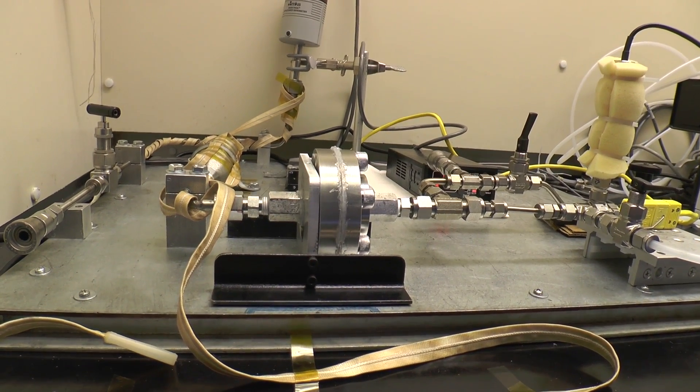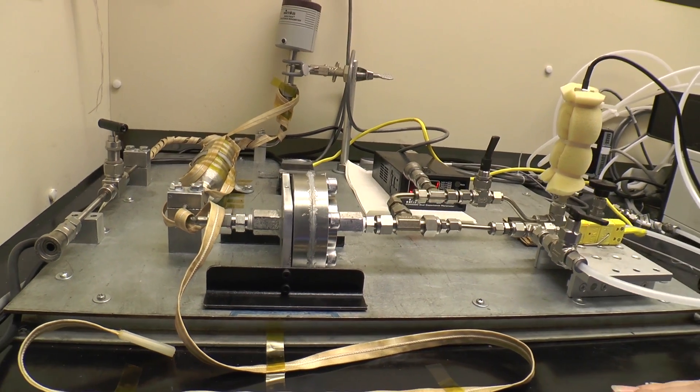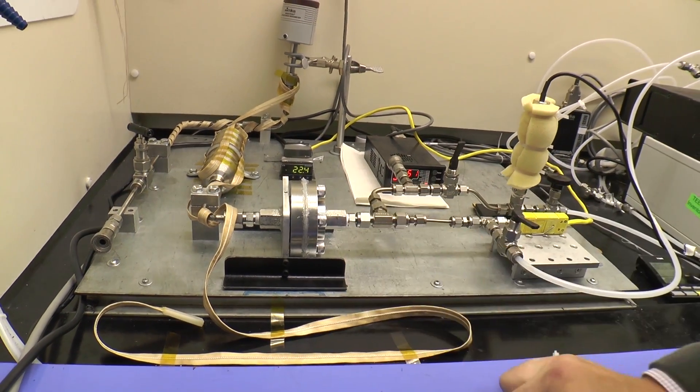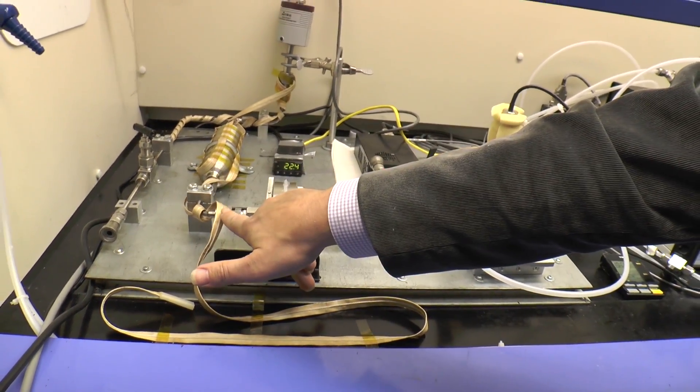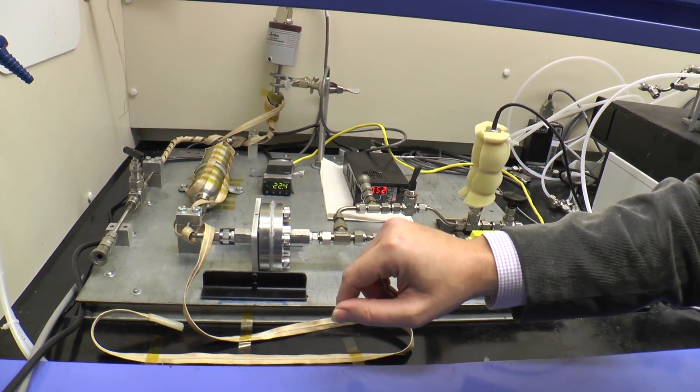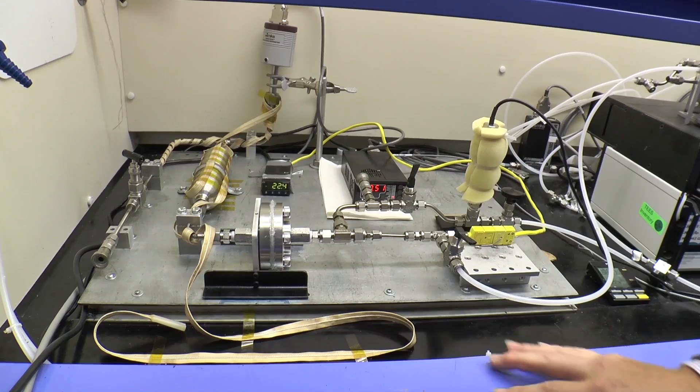That allows us to back out what the permeability of the membrane is given that we know the pressure on either side and the rate of pressure increase, which allows us to calculate how much gas is coming across the membrane.